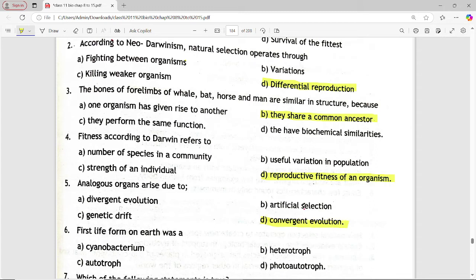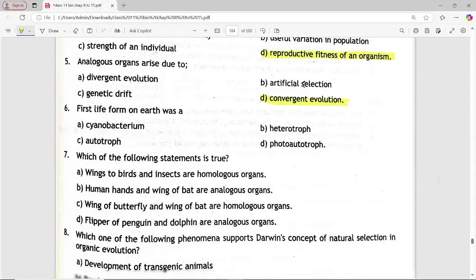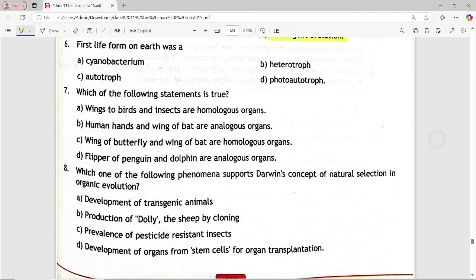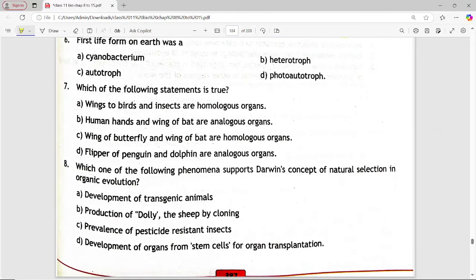Next is, first life form on earth was a. Options are, cyanobacterium, heterotroph, autotroph, photoautotroph. Answer is option D, photoautotroph.